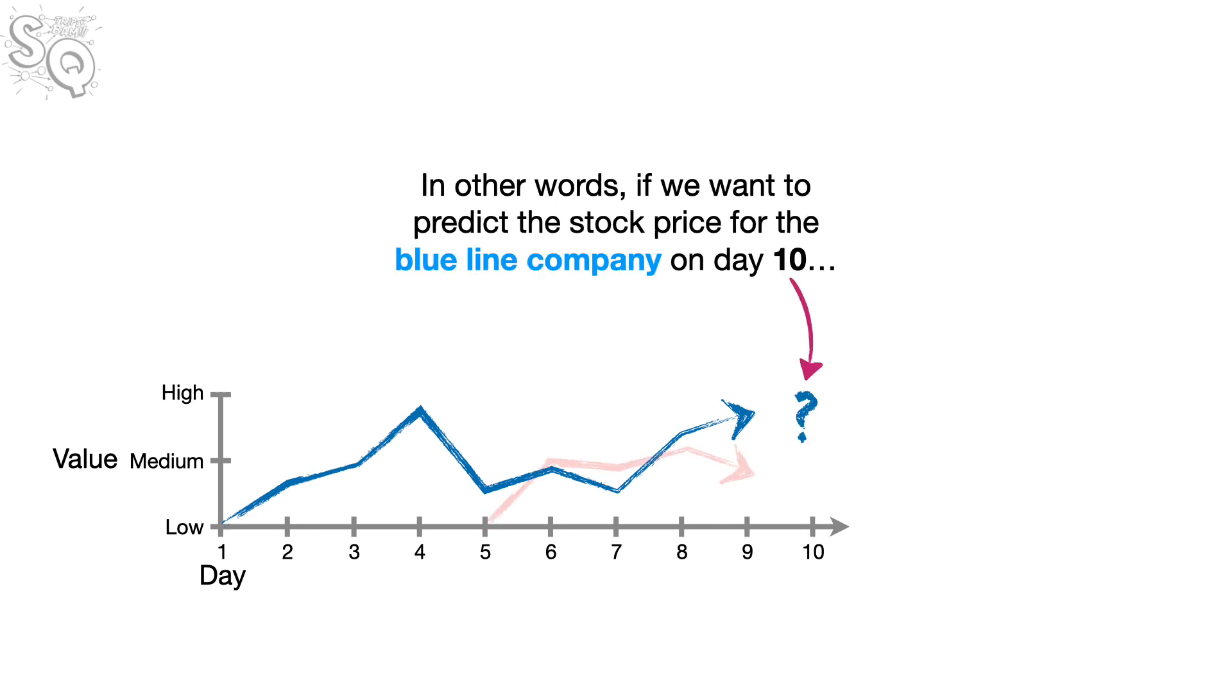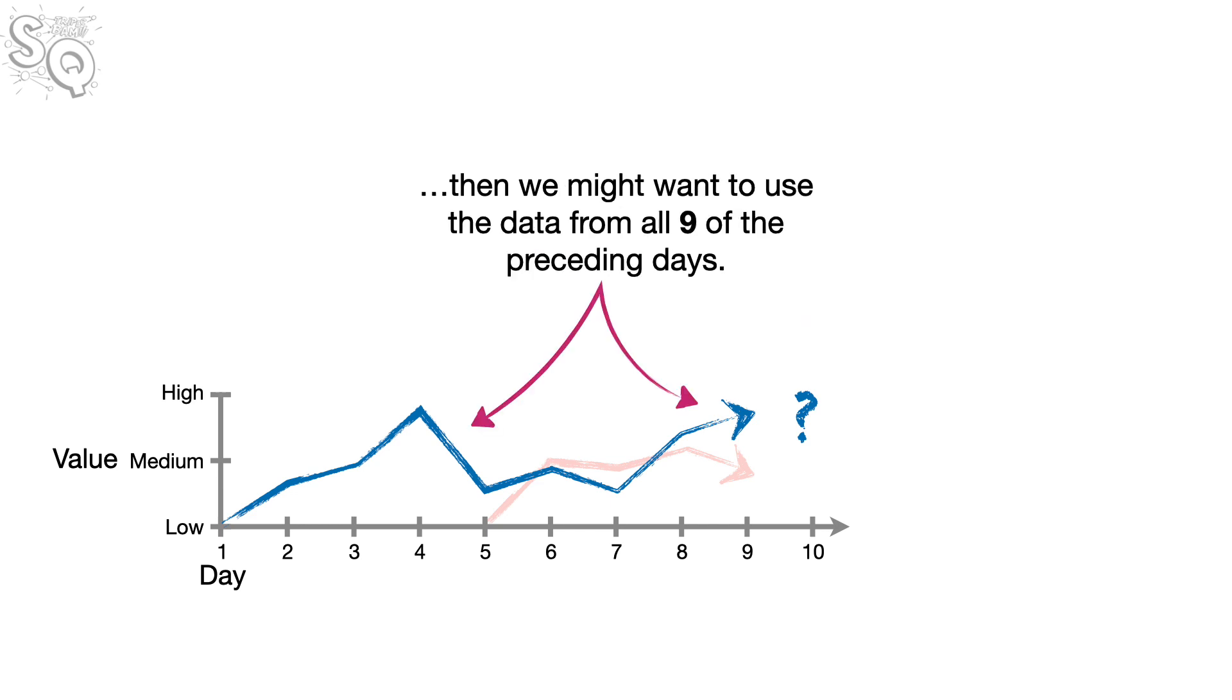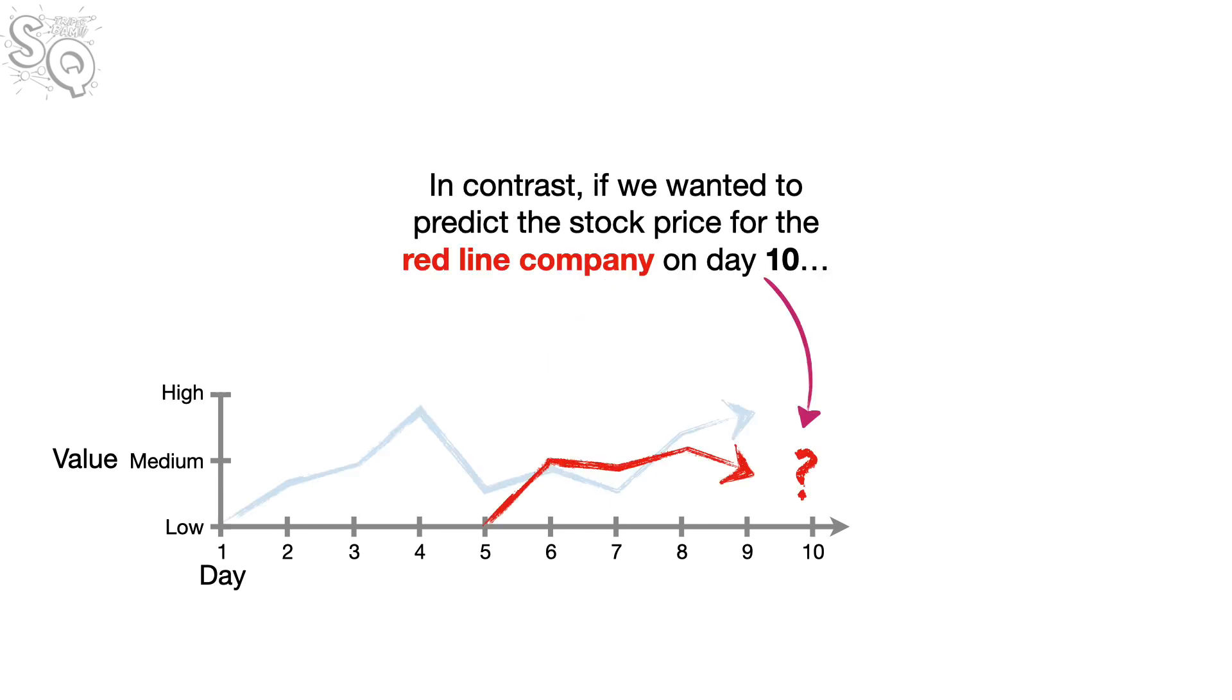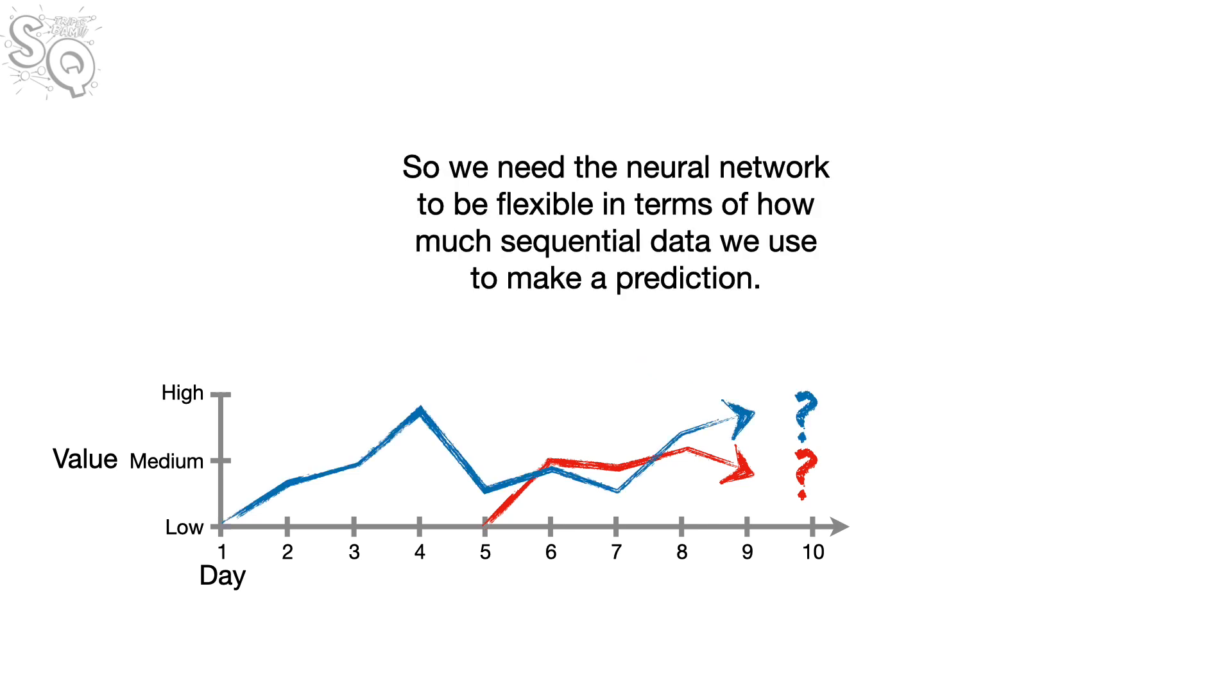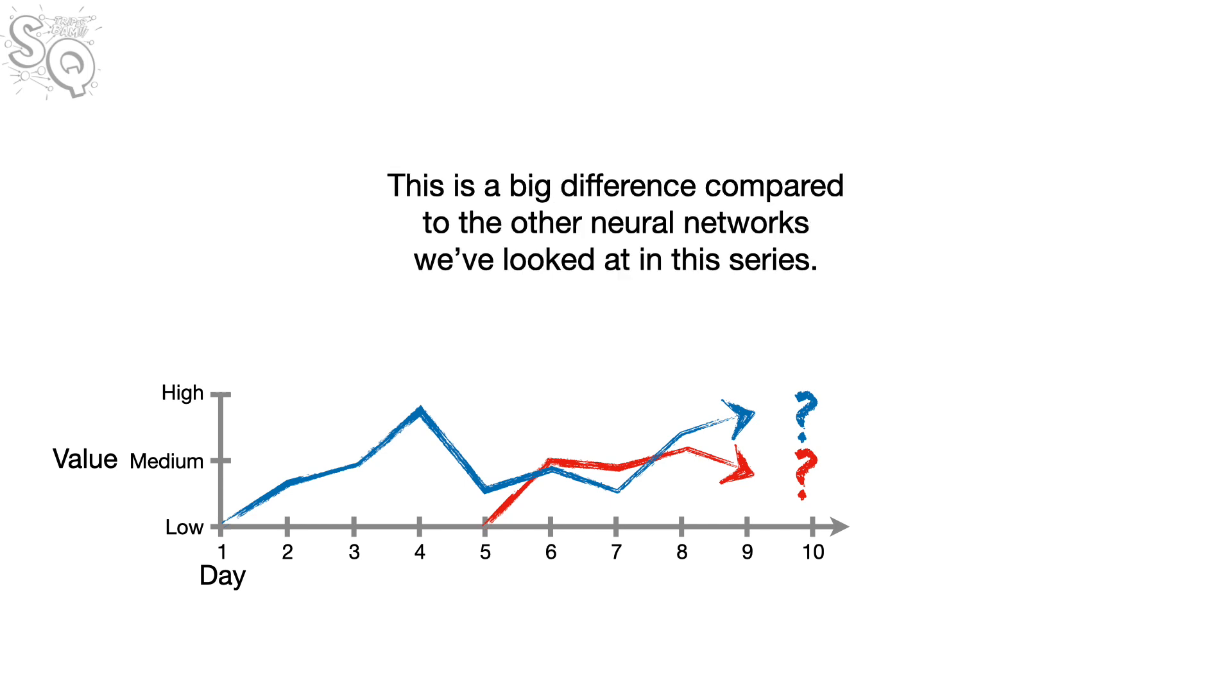What that means is, if we want to use a neural network to predict stock prices, then we need a neural network that works with different amounts of sequential data. In other words, if we want to predict the stock price for the blue line company on day 10, then we might want to use the data from all nine of the preceding days. In contrast, if we wanted to predict the stock price for the red line company on day 10, then we would only have data for the preceding five days. So, we need the neural network to be flexible in terms of how much sequential data we use to make a prediction.